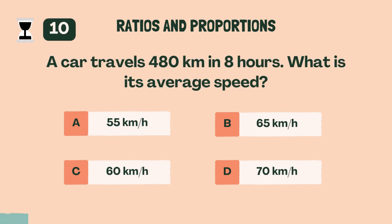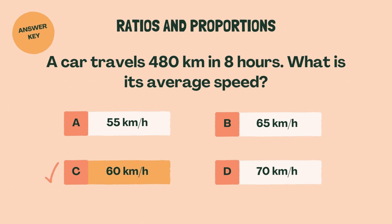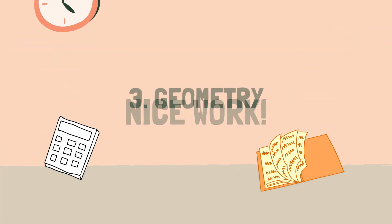A car travels 480 kilometers in 8 hours. What is its average speed? C, 60 kilometers per hour. Nice work. Time for the next category.